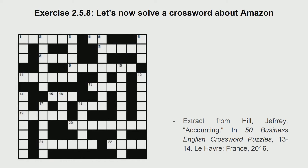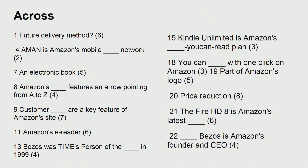Here is another crossword — clues across. Number 1: future delivery method, six-letter word. 4: AMAN is Amazon's mobile dash network, two letters. Electronic book, five letters. Number 8: Amazon's features — an arrow pointing from A to Z, four letters. 9: customer dash are a key feature of Amazon's site, seven letters. 11: Amazon's e-reader, six letters. 13: Bezos was Time's person of the dash in 1999, four letters. 15: Kindle Unlimited is Amazon's dash, three letters. 18: you can dash with one click on Amazon. 19: part of Amazon's logo. 20: price reduction. 21: the Fire at 8 is Amazon's latest dash, six letters. 22: Bezos is Amazon's founder and CEO, four letters.